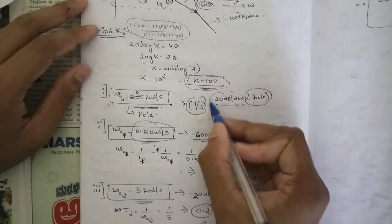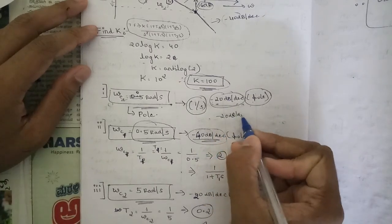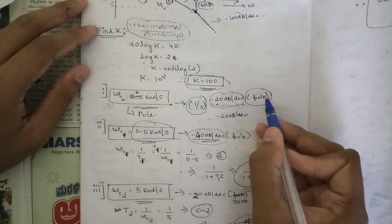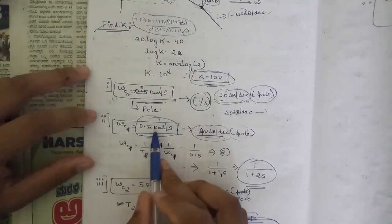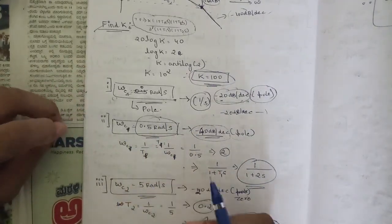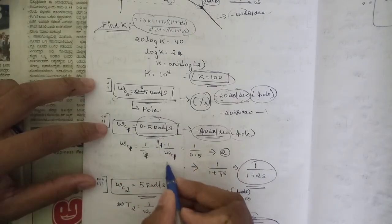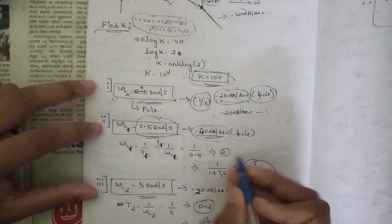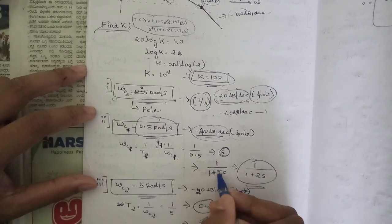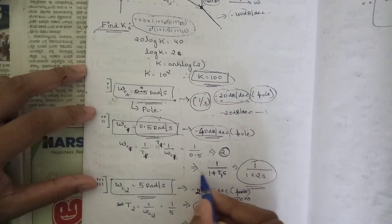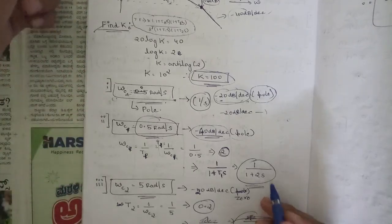The change in slope at omega c1 is minus 40 dB per decade — from minus 20 it changes to minus 40, meaning we are adding minus 20 dB per decade, so this is a pole again. Applying the relation T1 = 1/omega_c1 = 1/0.5 = 2. Since it is a pole, it goes in the denominator: 1/(1 + 2s).